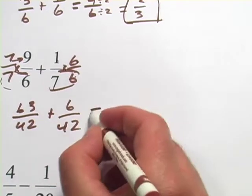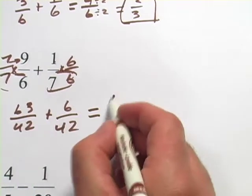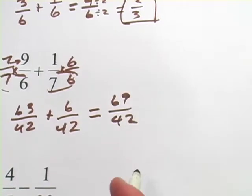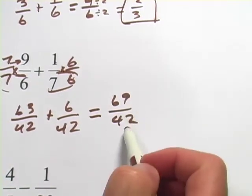Step 2 we're going to add. 63 plus 6 is 69 over 42. And step 3 is reduce to the simplest terms.